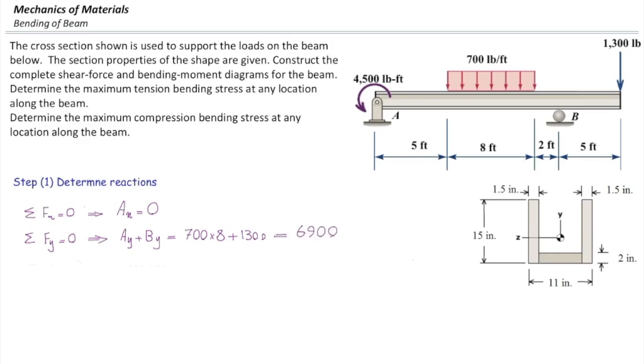I'm going to use the third equation, which is sum of the moments about A. First, we have a moment at A, which is 4,500 pound-feet. I assumed that counterclockwise is positive. That doesn't matter. We can consider each direction as positive in this case. So 4,500 pound-feet, positive.